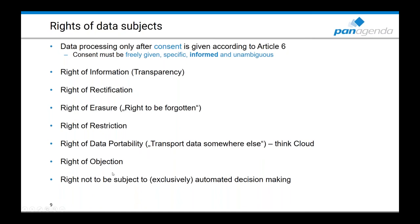The last right is the right not to be subject to exclusively automated decision-making. That means that once you share your personal data, a machine may not make an automatic decision on the data submitted. A machine can make a recommendation and a human being can review it, but it is not allowed for any machine in any context to just automatically make decisions — like firing people based on measurements — without human review.